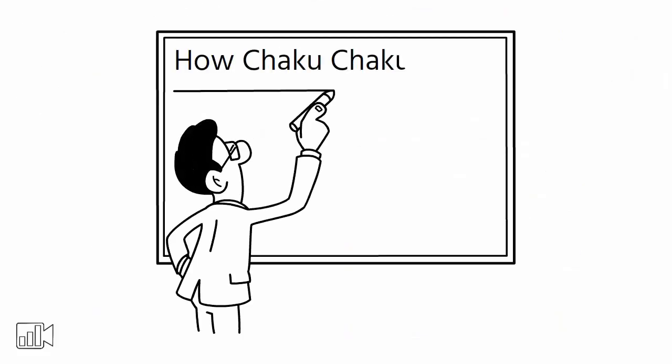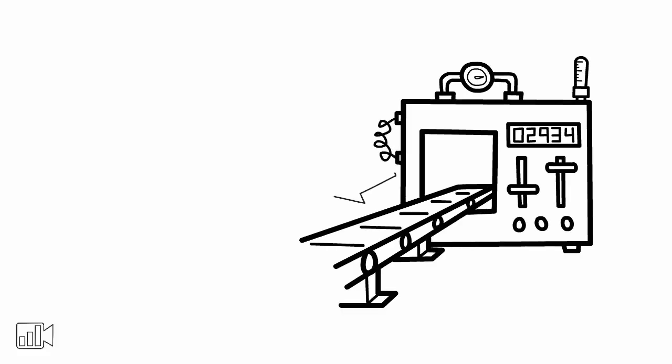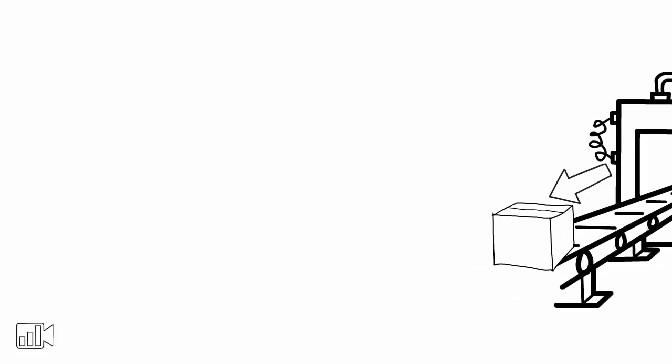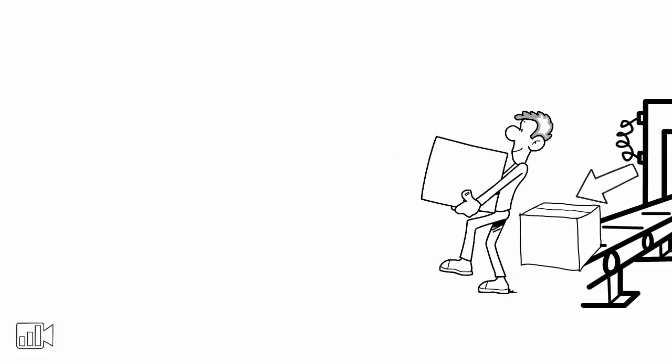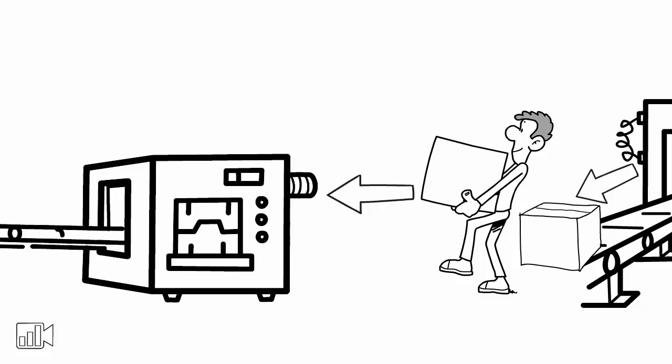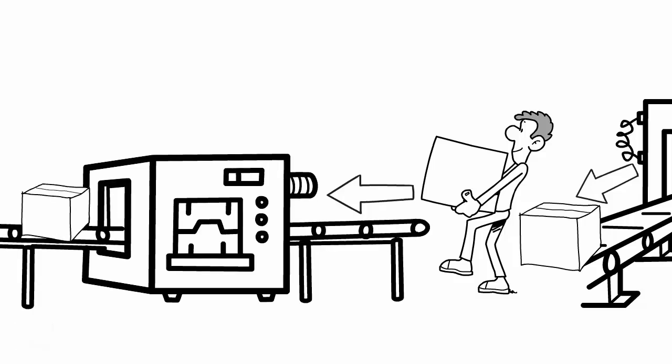Let's break down how Chakuchaku works. The first machine in the processing sequence automatically ejects a part as soon as its cycle is completed. The operator then takes the part to the next machine in the sequence, which has just finished cycling and ejected its part.